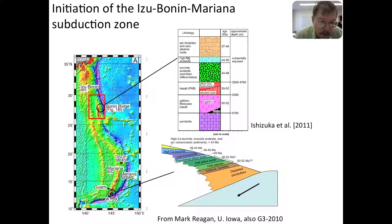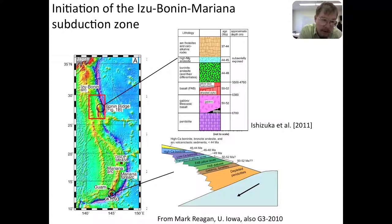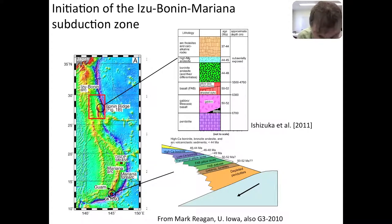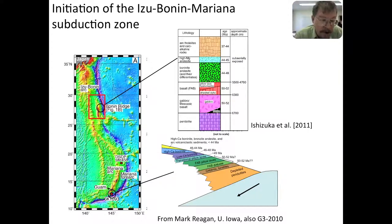What Mark Regan and collaborators discovered is that boninites are not the first rocks to come out during subduction initiation. Rather, rocks quite similar to MORBs come out first, though with a small trace element signal of subduction, and then those are rapidly followed by boninites. These two sections are 1500 km apart, yet the whole stratigraphy in both sections is nearly identical — first the FABs coming out, then followed several million years later by the boninites. We now have boninites coming out in our subduction initiation models.